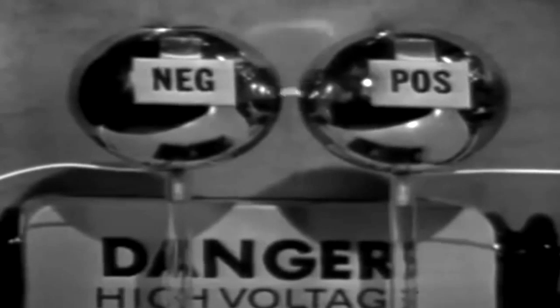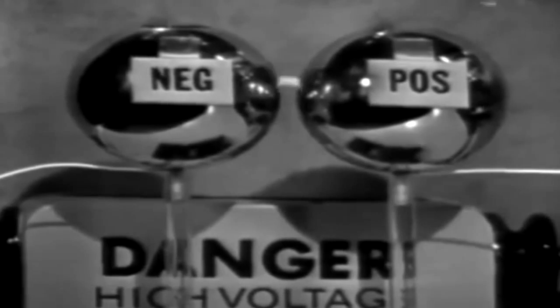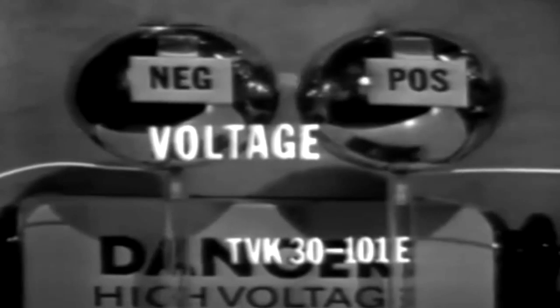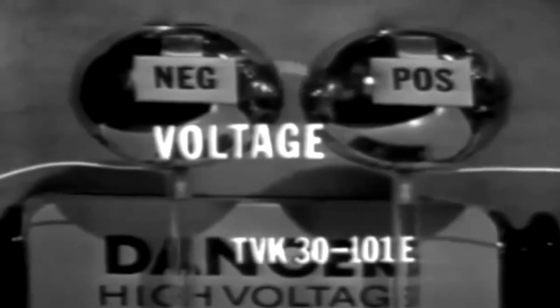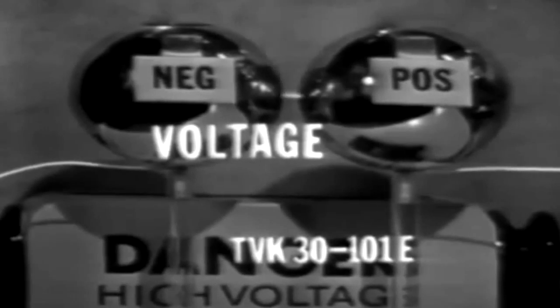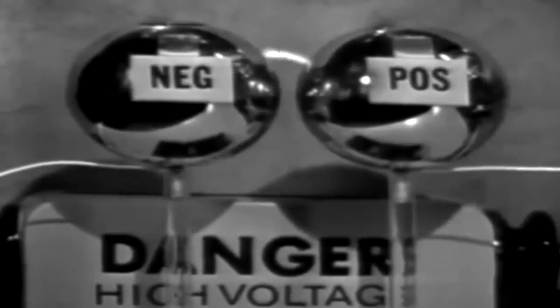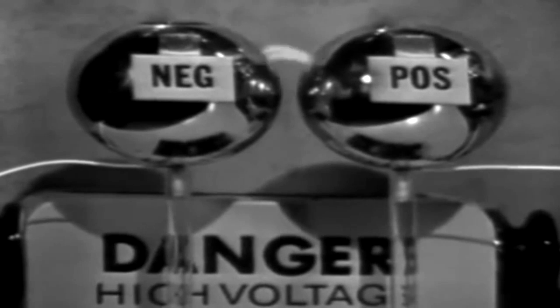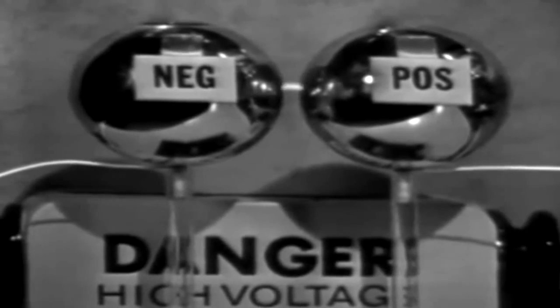This arc is being created by two charged bodies. One is a positive charge, the other a negative charge. In this case, the force is great enough to cause electrons to leave the negative charge, travel through air, which is an insulator, to the positive charge.